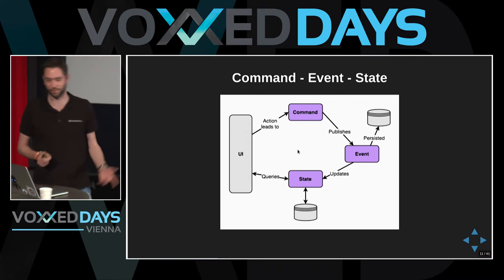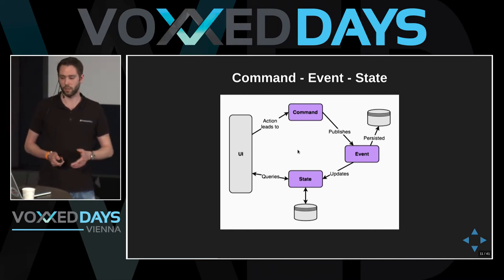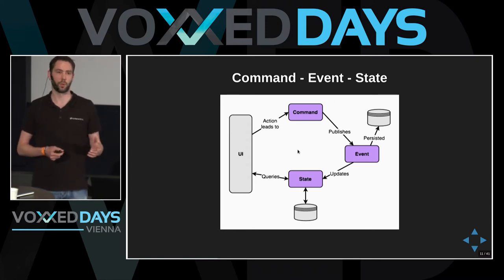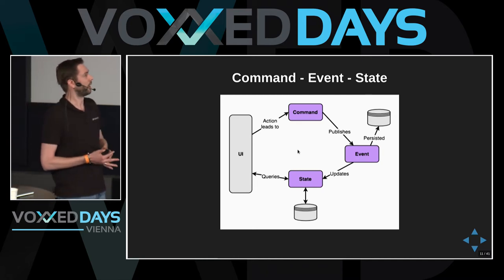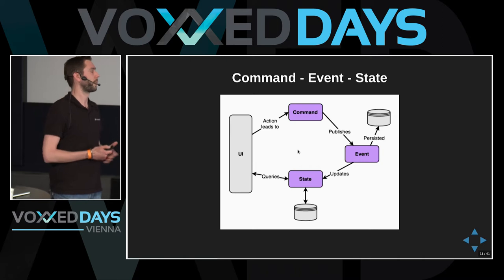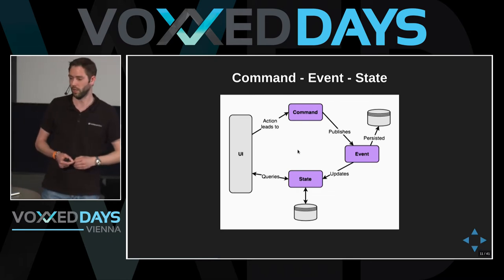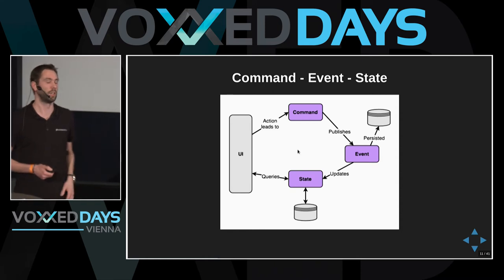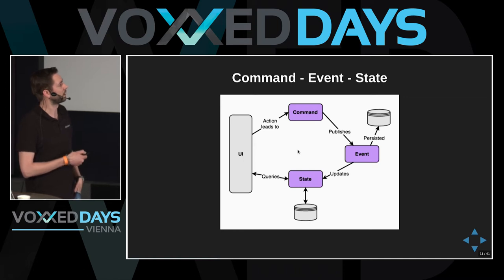Looking at the command, event, and state: the user does an action which leads to a command. From that point, the event is published. In Lagom, a command results in an event, that event is persisted, and then the event leads to an update of the state — which may or may not be persisted separately. The events can also lead to updates in different systems, and the state is queried by the UI.